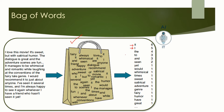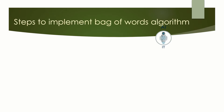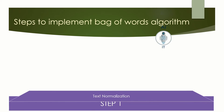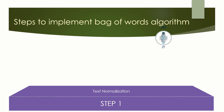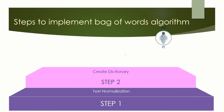We can say that Bag of Words gives us two things: a vocabulary of words for the corpus and the frequency of these words. Here's the step-by-step approach to implement the Bag of Words algorithm. The first step is text normalization, wherein we collect the data and pre-process it. The second step is to create a dictionary of unique words which occur in the corpus.